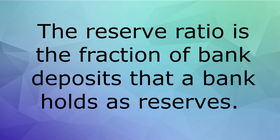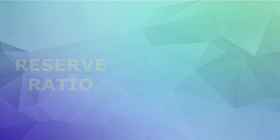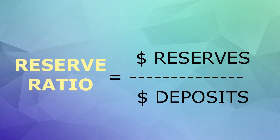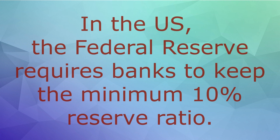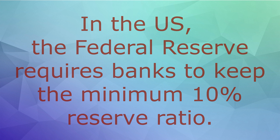This is how it works: every time you put money in a bank account, the bank keeps a small part of your money as the reserve and lends the rest. This is the third idea of monetary economics — the reserve ratio. The reserve ratio is the fraction of bank deposits that the bank holds as cash reserves, and the formula is: money in reserves divided by money in deposits. In the United States, the Federal Reserve requires banks to have a minimum reserve ratio of 10% for checkable bank deposits.